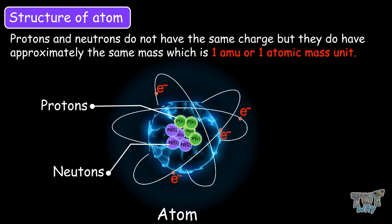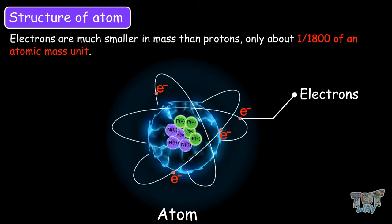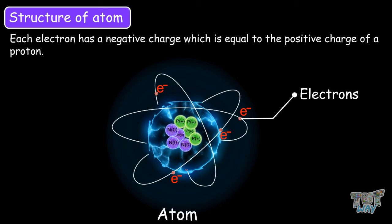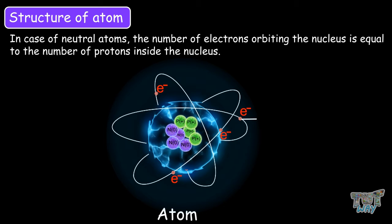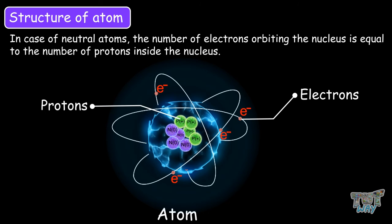Protons and neutrons do not have the same charge, but they do have approximately the same mass, which is 1 amu or one atomic mass unit. Electrons are much smaller in mass than protons — only about 1/1800 of an atomic mass unit. Each electron has a negative charge equal to the positive charge of a proton. In the case of neutral atoms, the number of electrons orbiting the nucleus is always equal to the number of protons inside the nucleus.